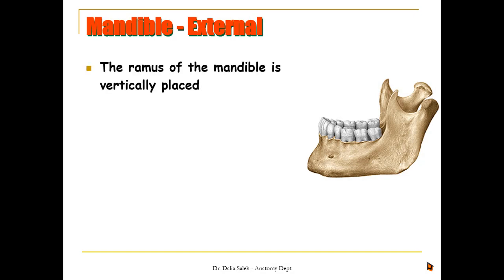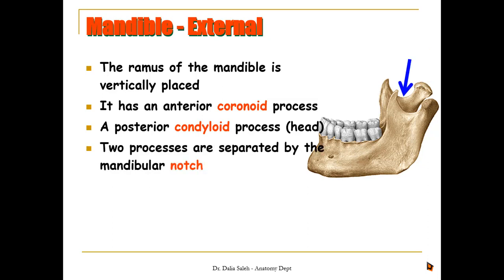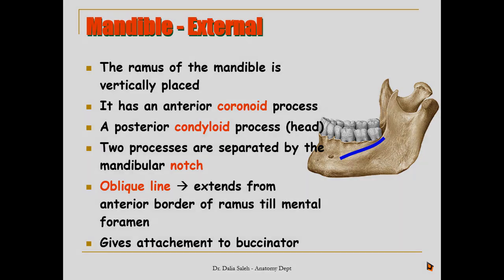If we look at the ramus from the outside, the ramus is vertically placed. It has an anterior coronoid process and a posterior condyloid process, also called the head of the mandible. The two processes are separated from each other by a notch called the mandibular notch. There is also an oblique line that extends from the anterior border of the ramus to the mental foramen, giving attachment to the lower fibers of the buccinator muscle.